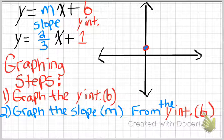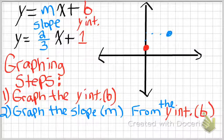From the y-intercept — meaning from right there — you're going to go up 2 over 3. So up 1, 2, over 1, 2, 3. That's where it goes, and notice it's from the y-intercept. That is vital. I promise you that's the biggest mistake students make. So that's step 2.